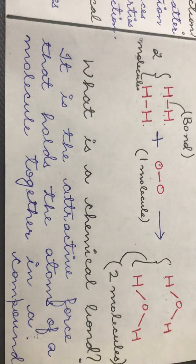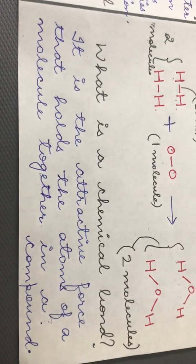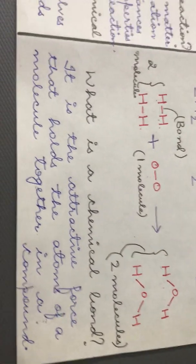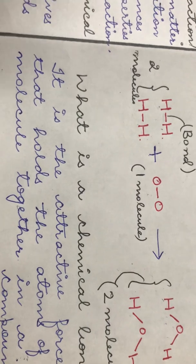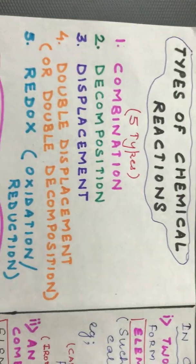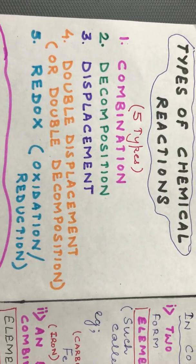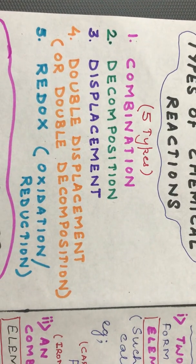A chemical bond is the attractive force that holds the atoms of a molecule together in a compound. Moving further, we will now discuss the different types of chemical reactions. There are in all five types of chemical reactions.